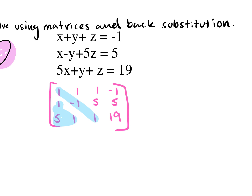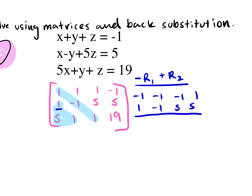To make that a zero, I multiply row one by negative one and add it to row two. So my new row one becomes: negative one, negative one, negative one, positive one. Row two is one, negative one, five, five. We combine these together and the new row two becomes: zero, negative two, four, six.